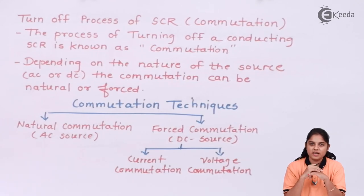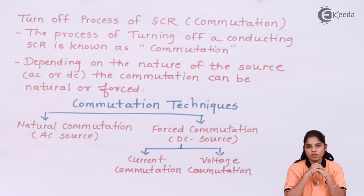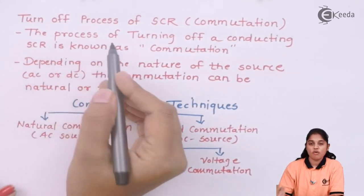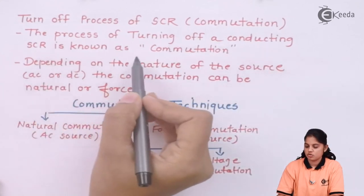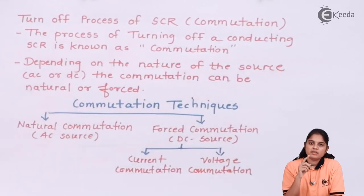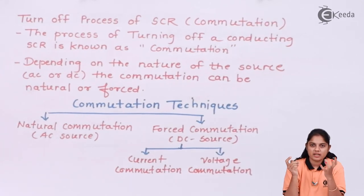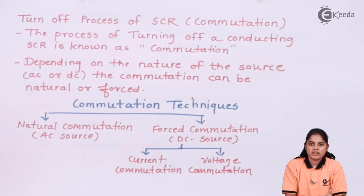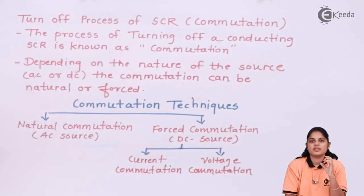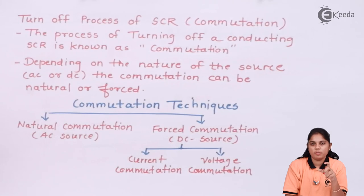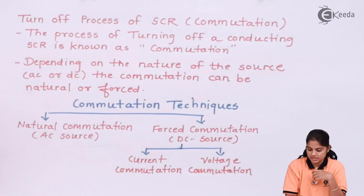Commutation is the process of turning off a conducting SCR. When it is turned on, we say the SCR is latched, and the latching current IL is important at that time. As discussed during VI characteristics, latching current is an important parameter while deciding the turning on of SCR. But holding current is an important parameter when understanding the turning off process of an SCR.